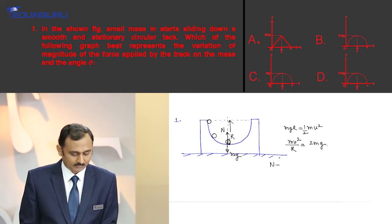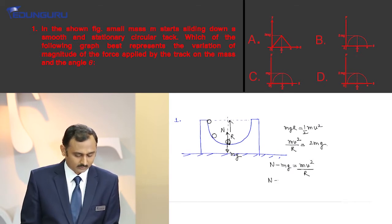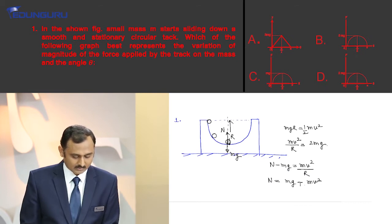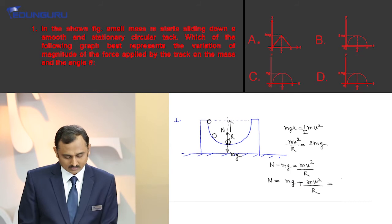Towards the center, N minus mg equals mv squared by r. So N equals mg plus mv squared by r. This is 3mg.